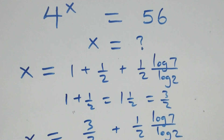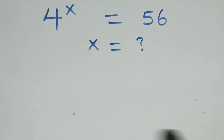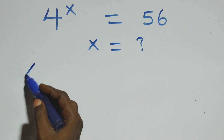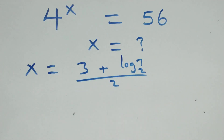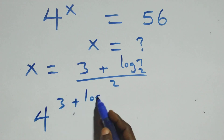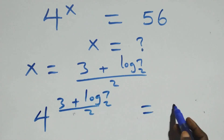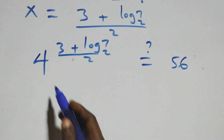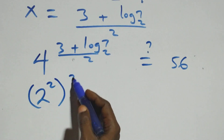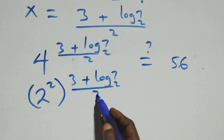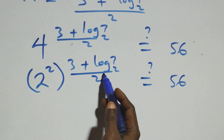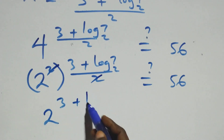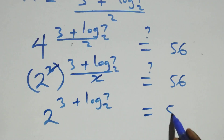Let's check here whether this satisfies the given problem. We substitute the value of x, which is x equals 3 plus log 7 base 2, all over 2. What we have becomes 4 raised to power (3 plus log 7 base 2) all over 2, should equal 56. We can write 4 as 2 squared, raised to that power. The exponent 2 in the base and the 2 in the denominator cancel, leaving 2 raised to power 3 plus log 7 base 2.